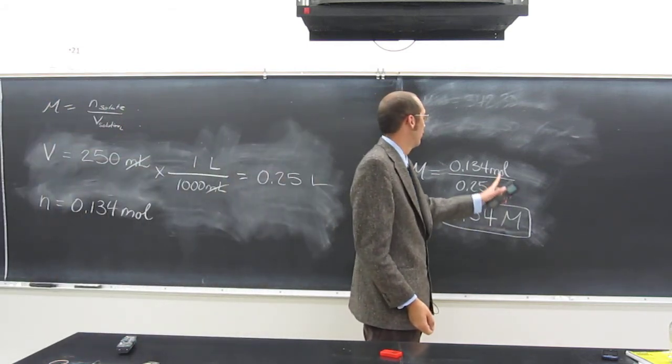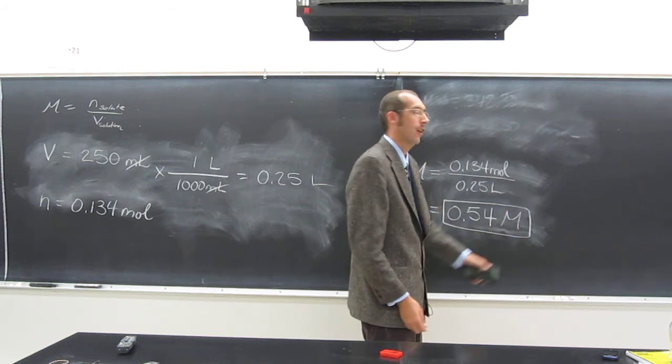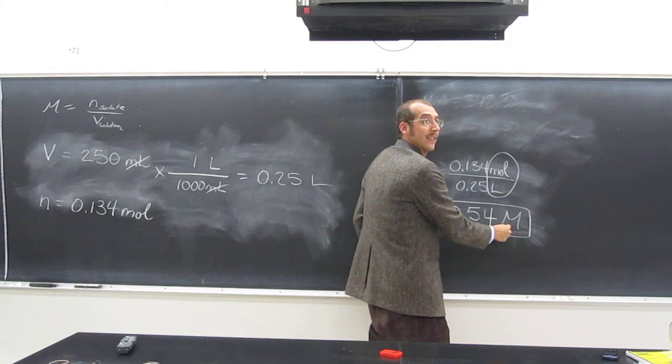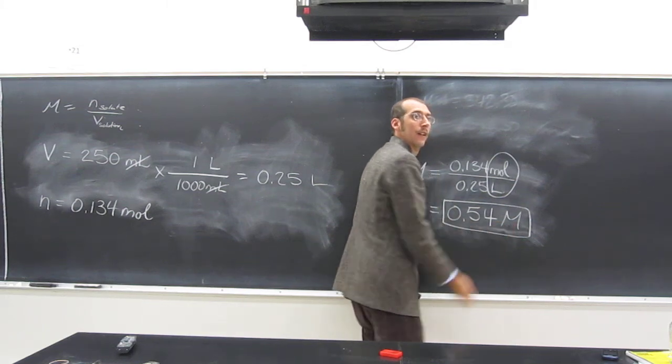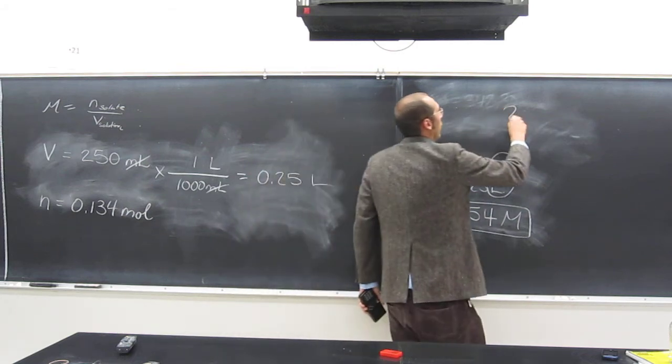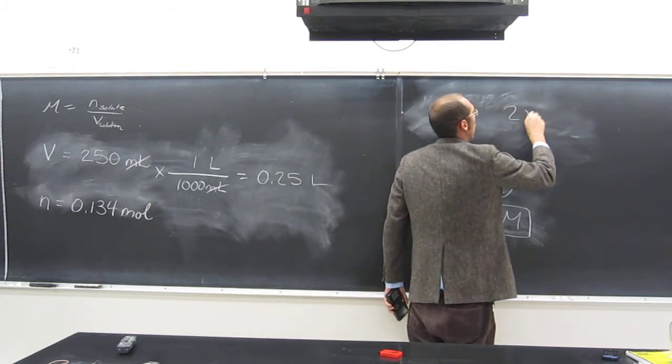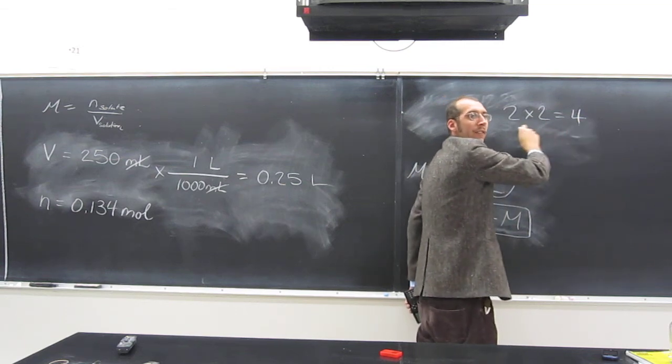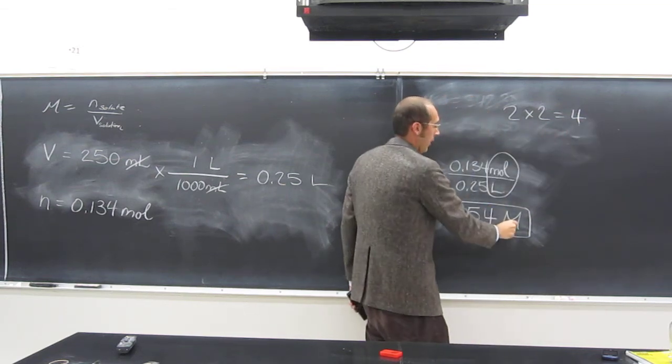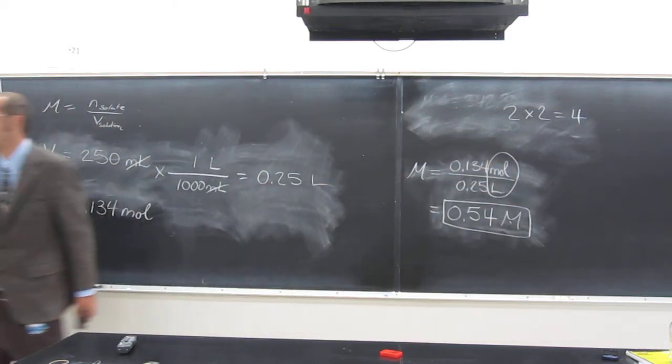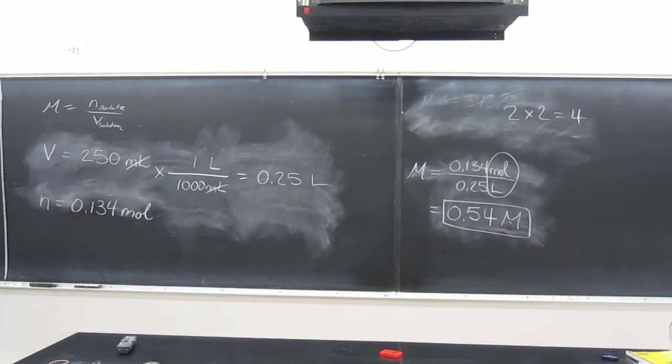Molar means moles per liter. So whenever you see M, you can put moles per liter instead. Just like whenever you see the M symbol, you can use that instead of writing out all of that stuff. Does that make sense? Any other questions on that? Good.